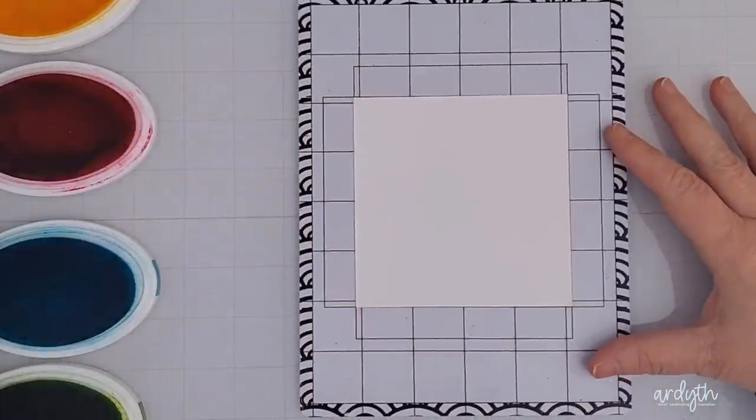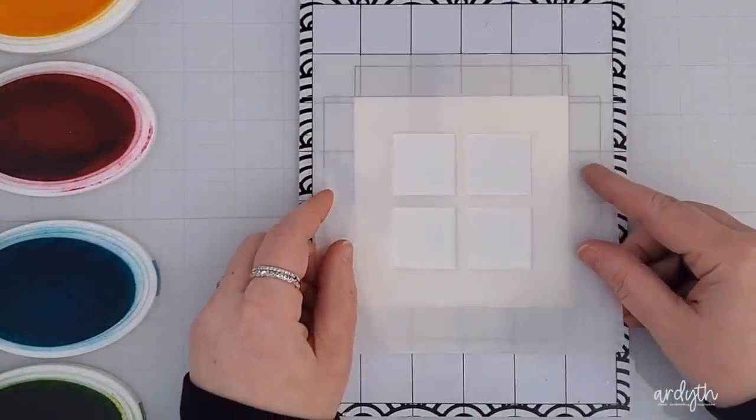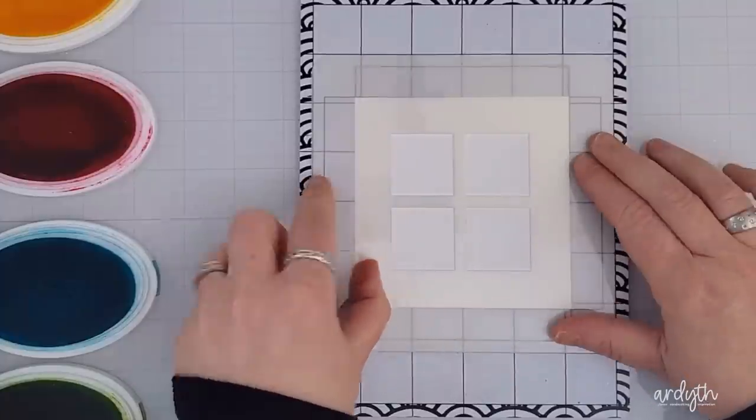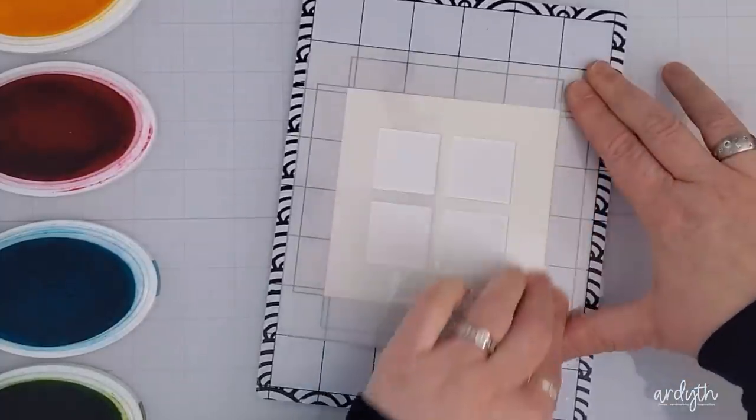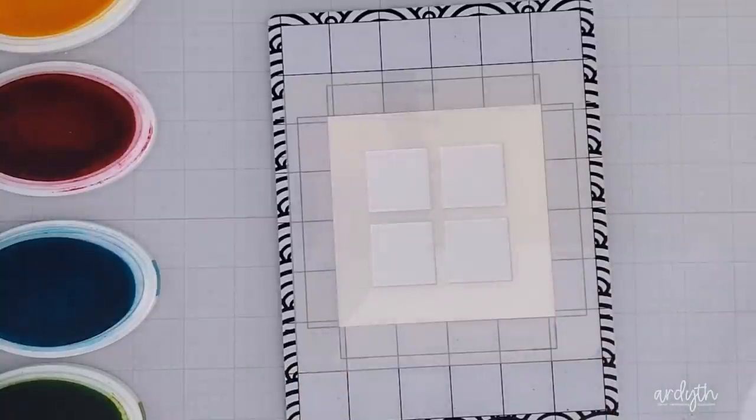Now here's another simple way to use this stencil. This time I'm starting with a square panel and the lines on the sticky mat keep it easy to line up. What I noticed is that the mat actually holds the stencil so I don't even need to tape it down, which is really nice.